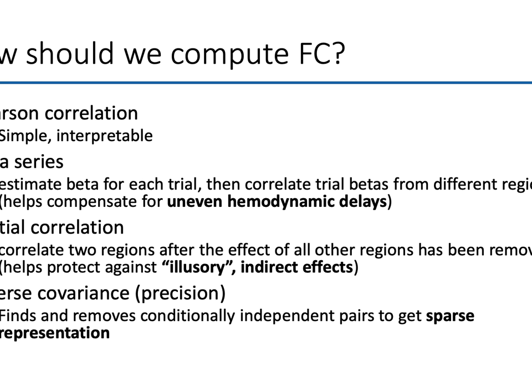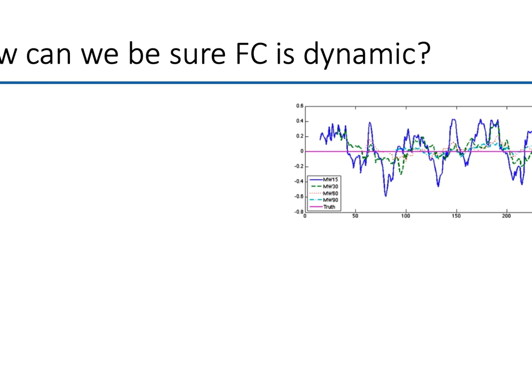There's also the question of how we should compute functional connectivity. Most people go with the simple Pearson correlation — it's simple and interpretable — but for certain questions that might come with risks, and you might want to consider some of the other available options.